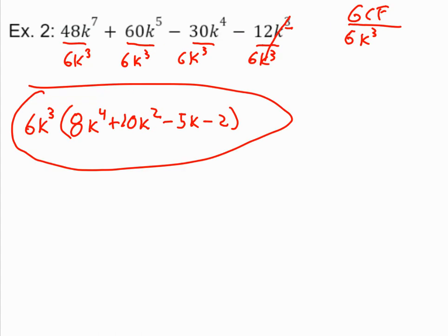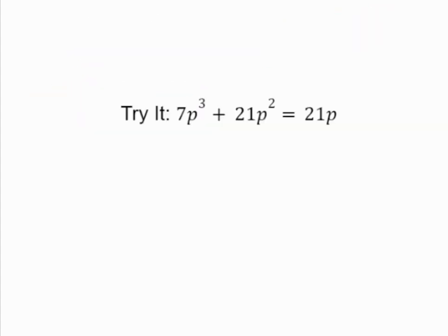So, like always, I'm going to leave you with a try it problem. This has a little typo on it. This should be 7p cubed plus 21p squared. And then, instead of an equal sign there, that should be minus 21p. So, go ahead and give that one a try and see how you do.